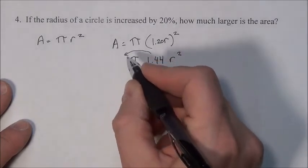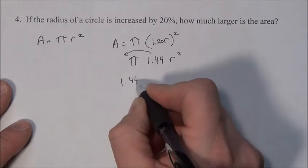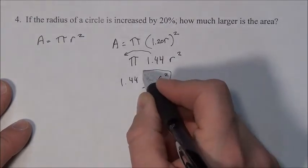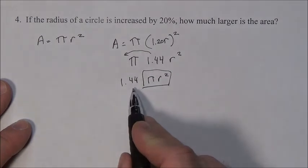So if I put the 1.44 out front, we can see πr². There's the normal area, and it's getting multiplied by 1.44.